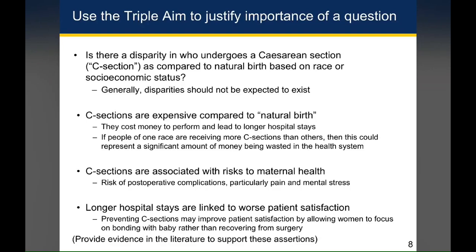Let's apply that thinking to the question of whether there's a disparity in who undergoes a C-section as compared to natural birth based on race or socioeconomic status. Generally, we can all agree that on medical grounds, a disparity like this should not exist. There may be reasons why you expect to find this disparity in the scientific literature, and that's why it's important to answer this question whether the answer is yes or no — because if you find a disparity, that's important because it should not exist, and if you don't find it, that's important because it's contrary to what was expected.